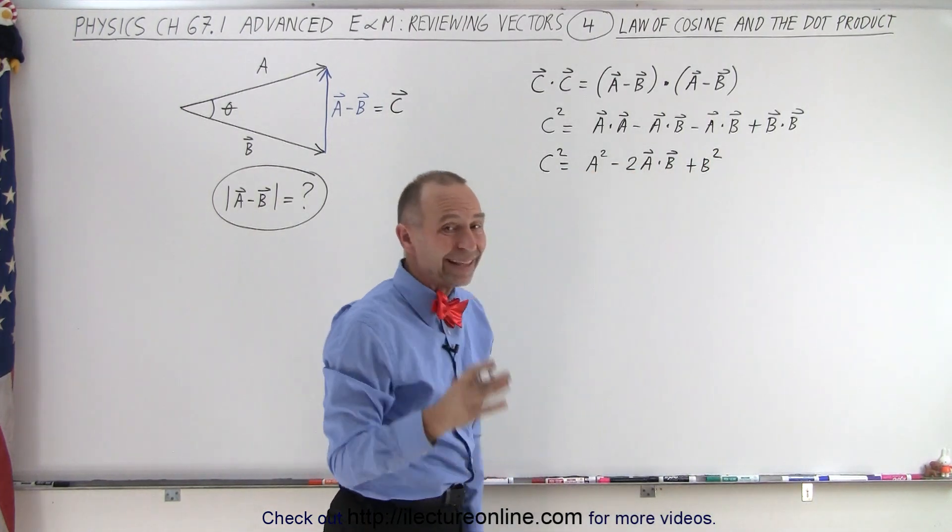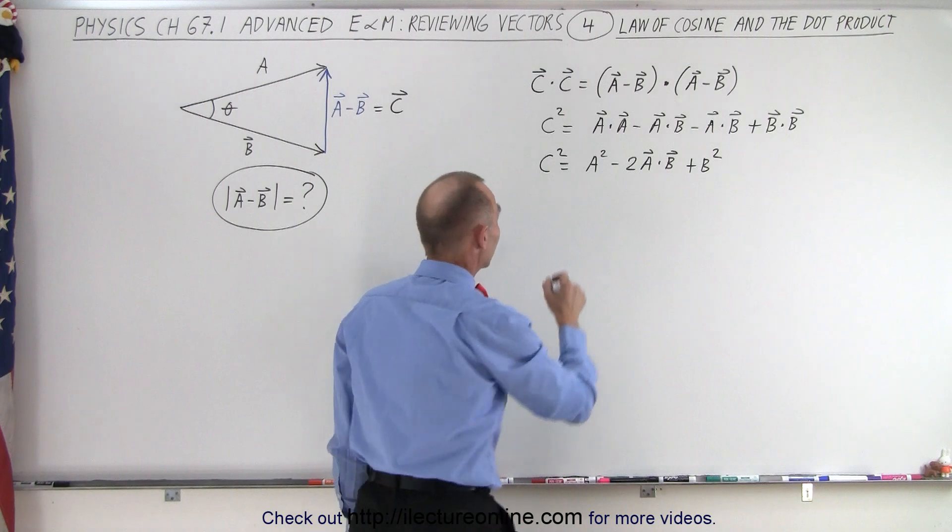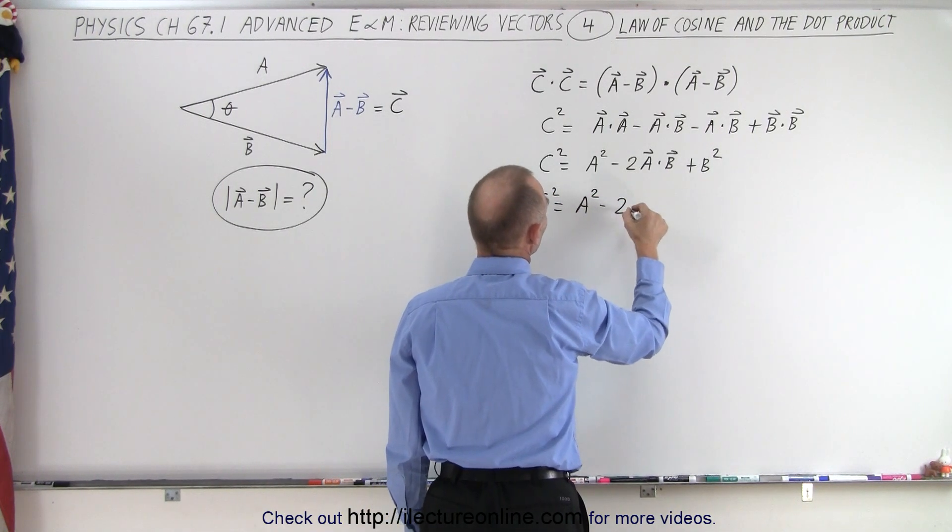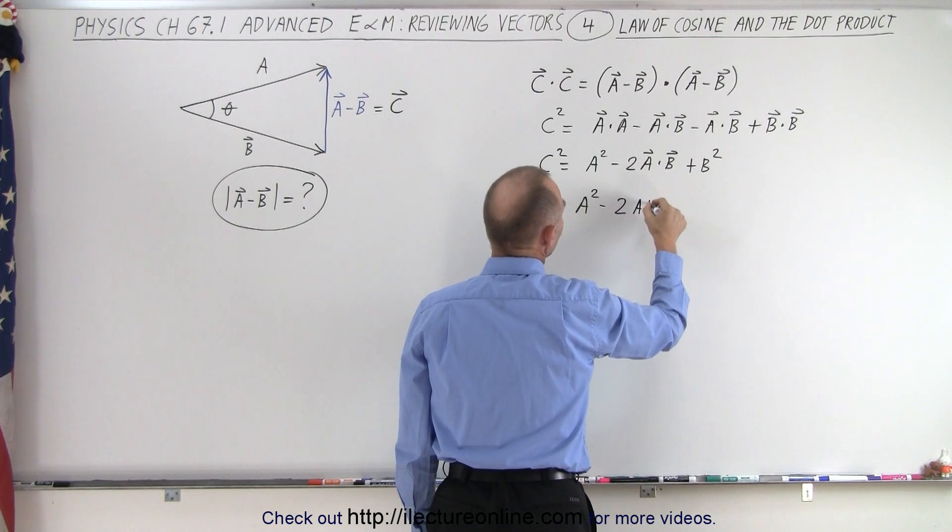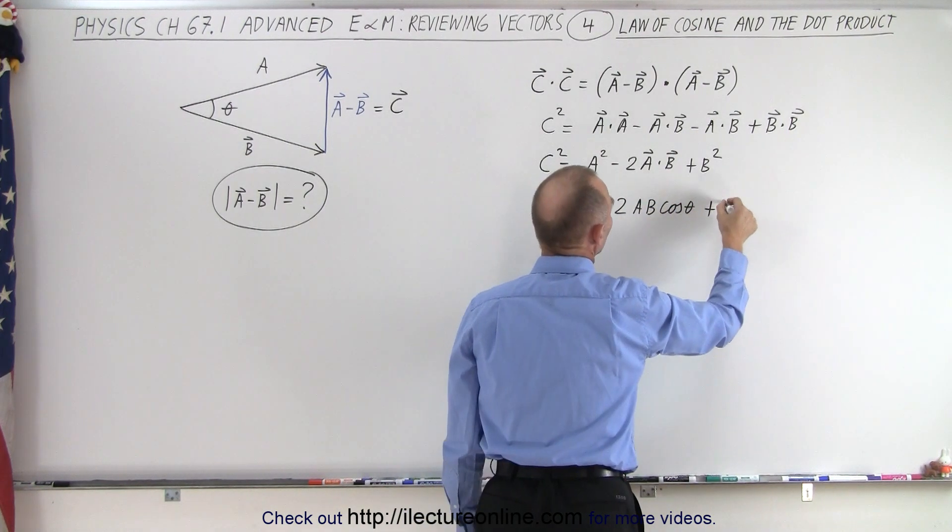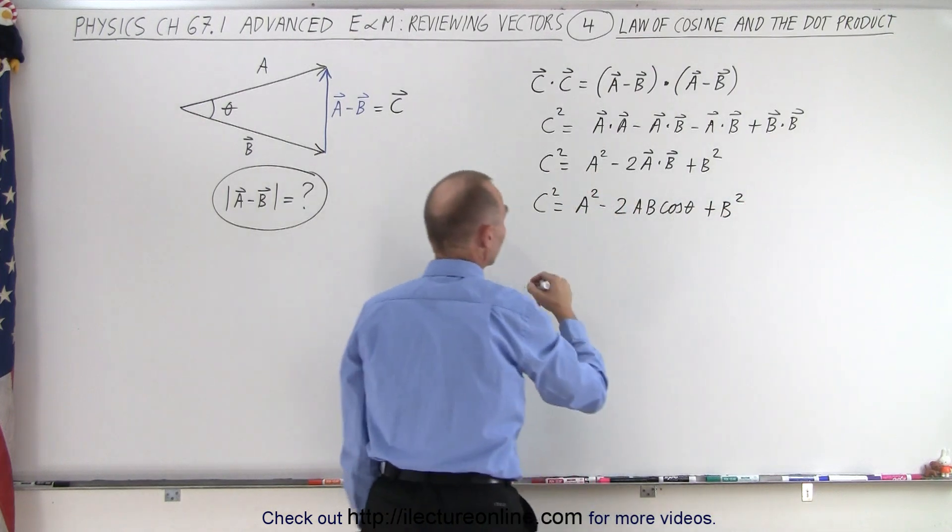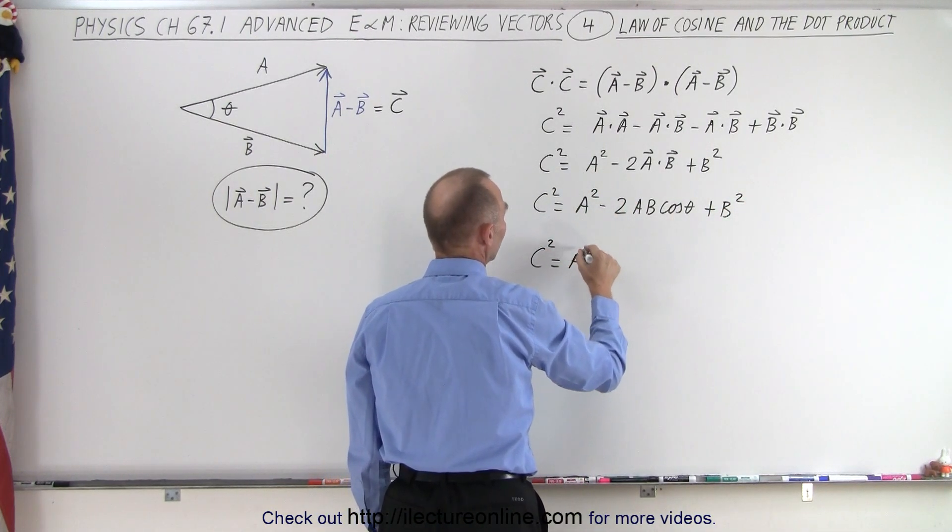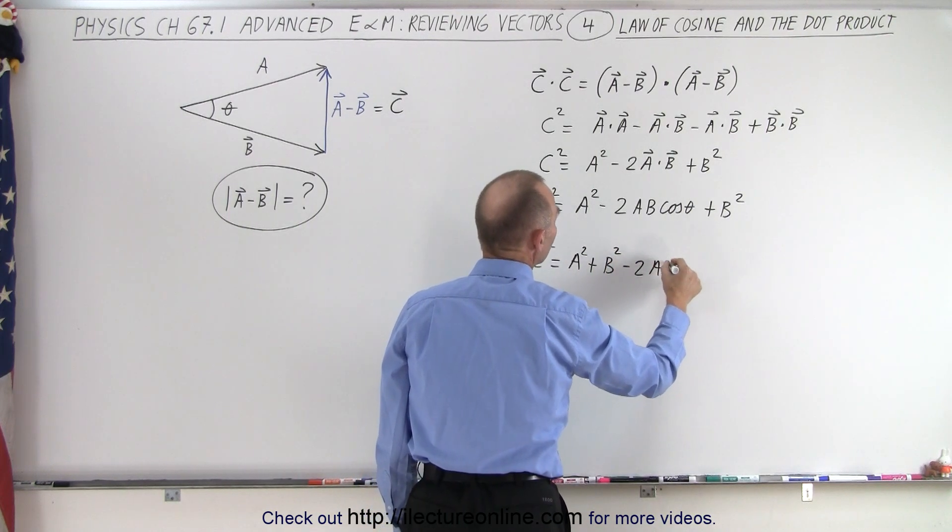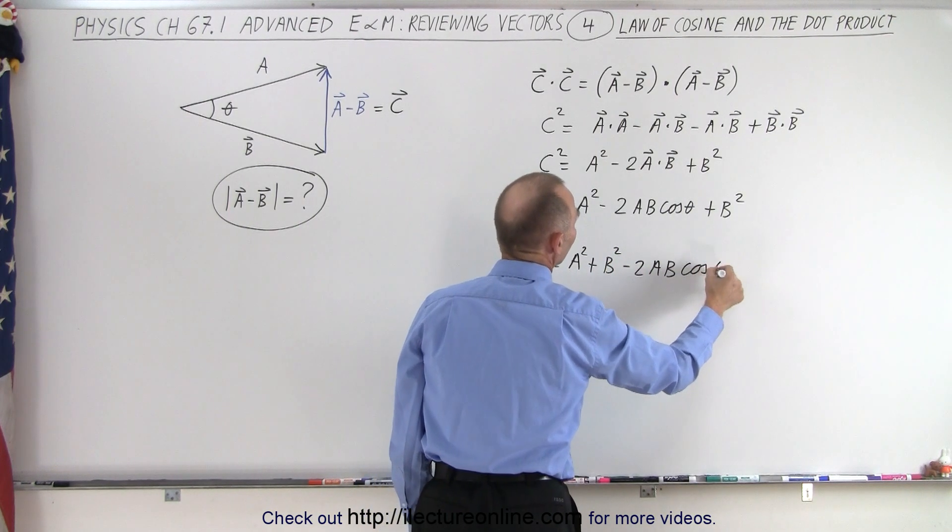And of course, a dot b is a times b times the cosine between them. So c squared is equal to a squared minus 2 times a times b times the cosine between the two, and then plus b squared. And if I rearrange the terms, I can say that c squared is equal to a squared plus b squared minus 2ab times the cosine of theta.